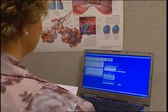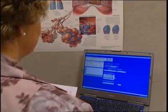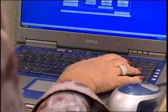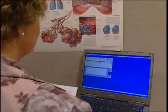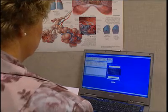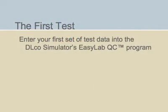Review the results as they are displayed on the computer monitor before performing the next simulation, checking that the breath hold time captured is between 9 and 11 seconds, and the computed values are within a range appropriate for the particular DLCO device you are testing. Repeat the test four more times, using the middle range gas and with the volume syringe set to 3 L. Once you have completed five satisfactory tests at 3 L, it would be a good time to stop and enter data into EasyLab QC. Having done so, then you would continue with the testing.